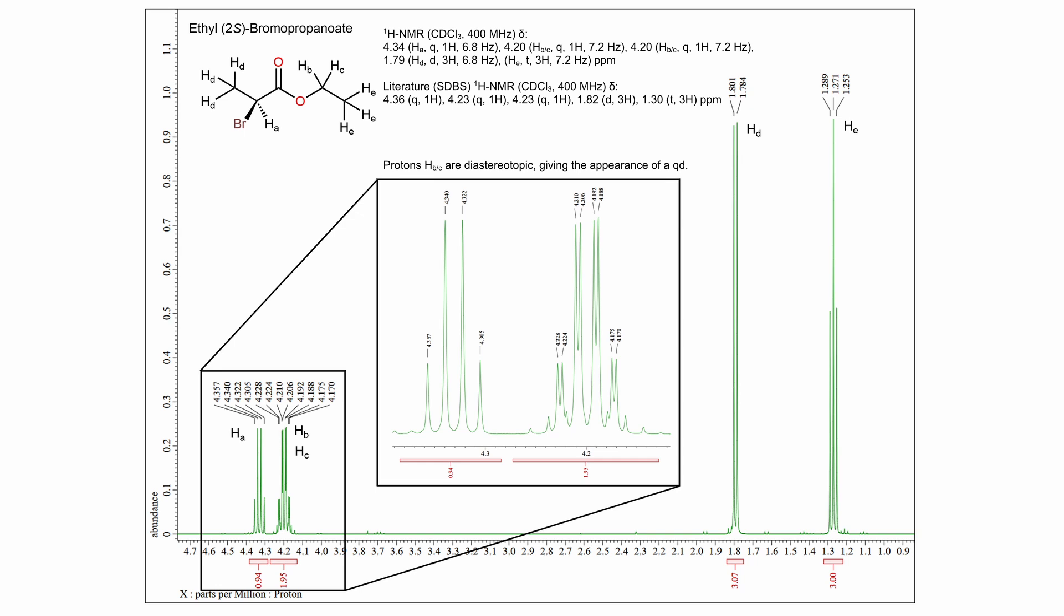Looking at the proton NMR in deuterated chloroform, the observed chemical shifts, splitting patterns and integrations of the main peaks all correspond with that of the literature values for ethyl-2-bromopropionate.